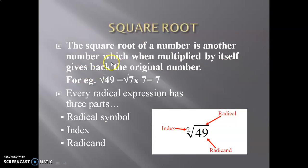Square root of a number is another number which when multiplied by itself gives back the original number. For example, root 49 is 7. Every radical expression has three parts: radical symbol, index, and radicand.